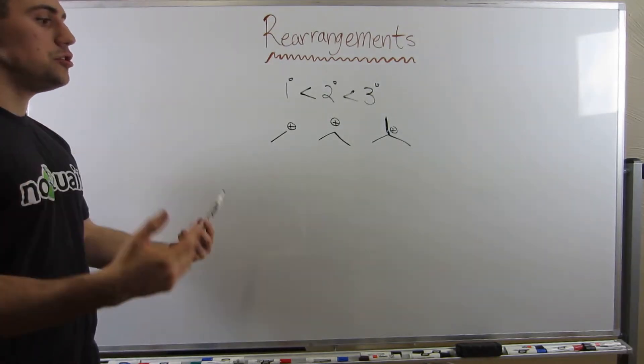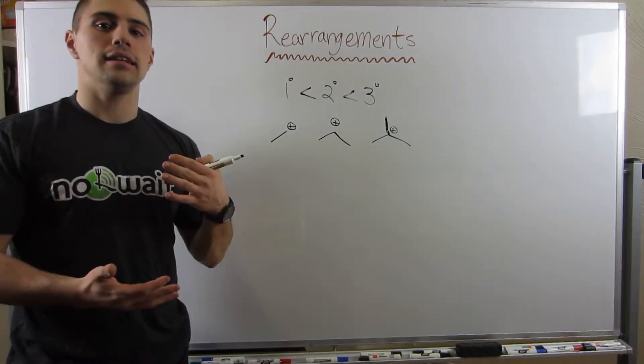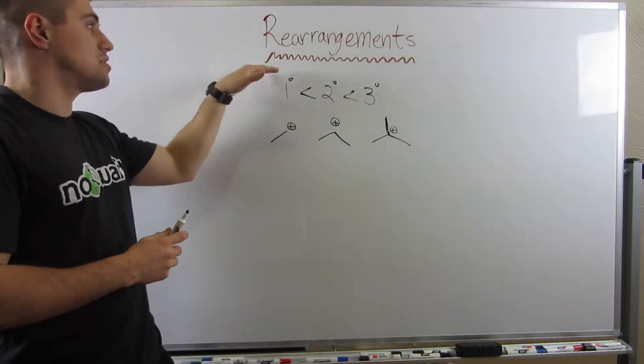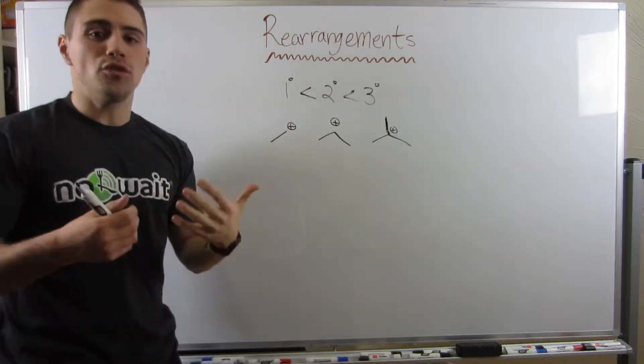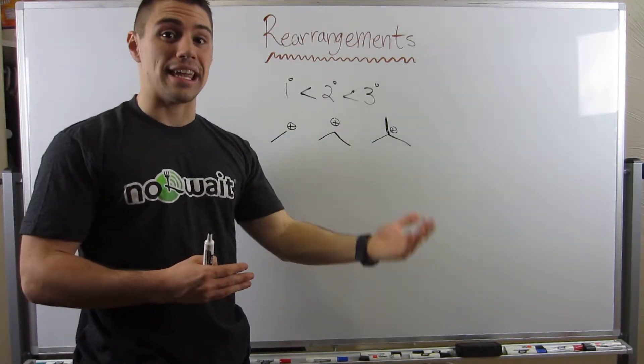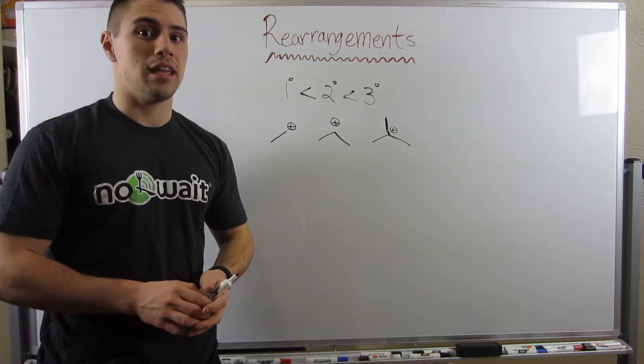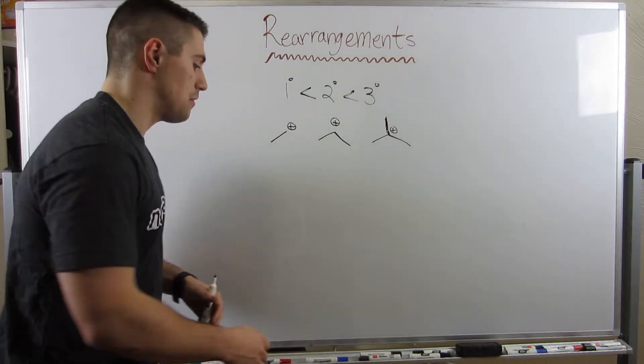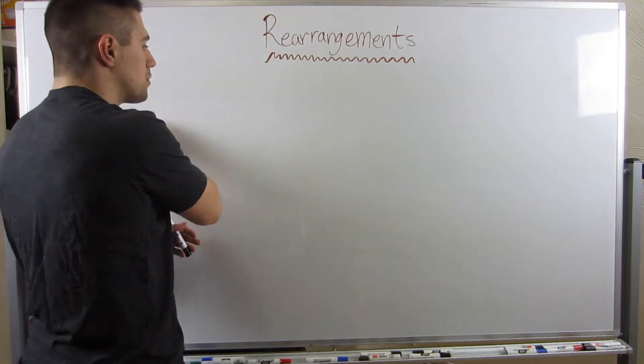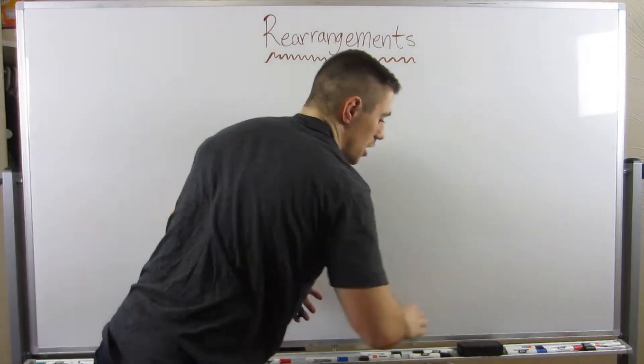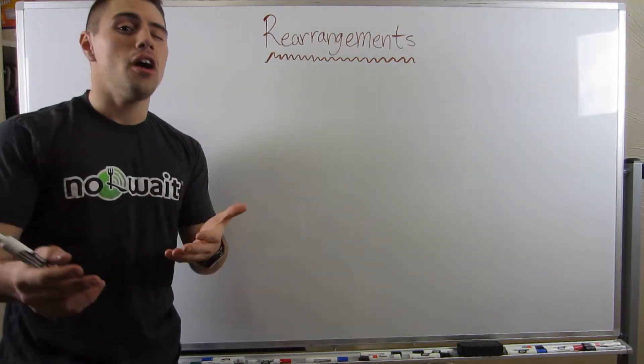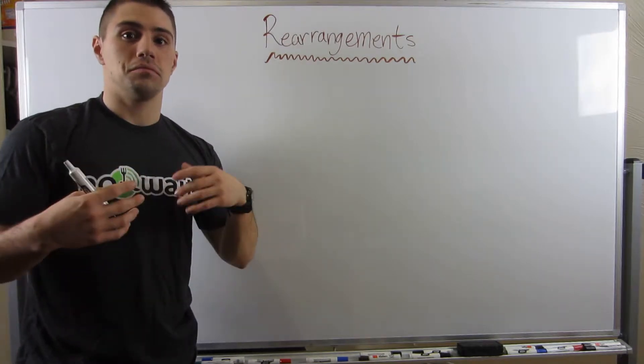So here's my question to you guys. Remember we say nature always tends towards stability. What we're going to see with these rearrangements is that if you form a carbocation in a situation where it can make itself better, more stable, it will do that in two different ways that we're going to look at. But I will just show you some examples.